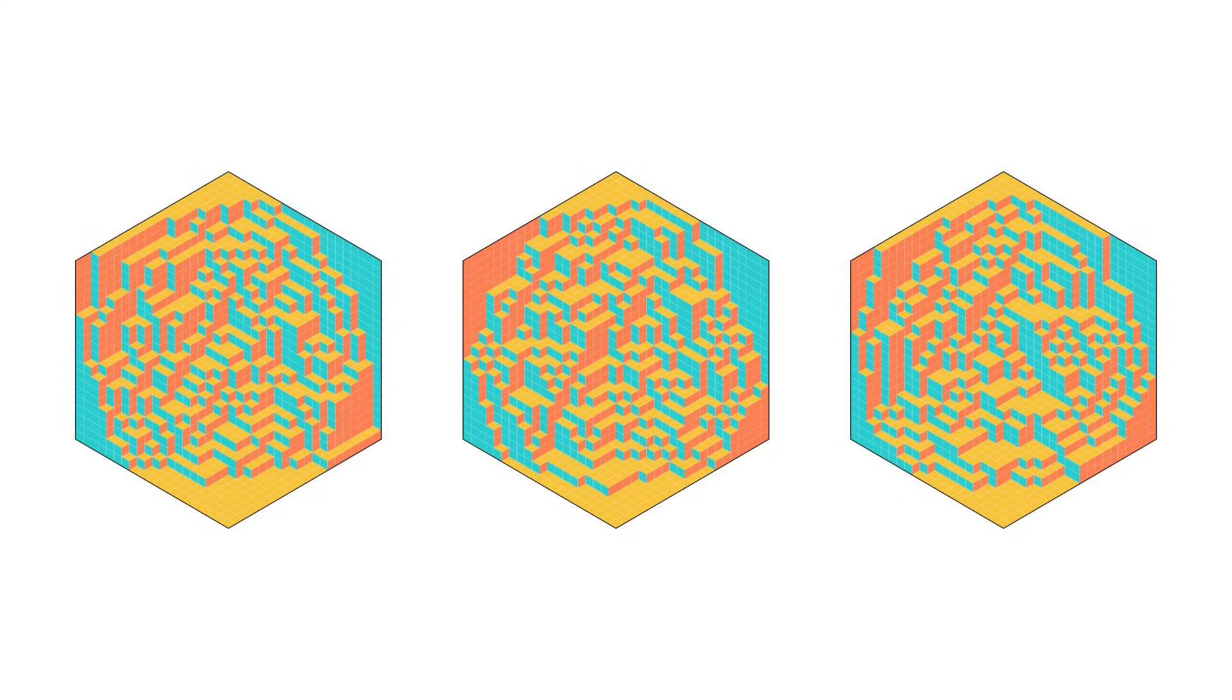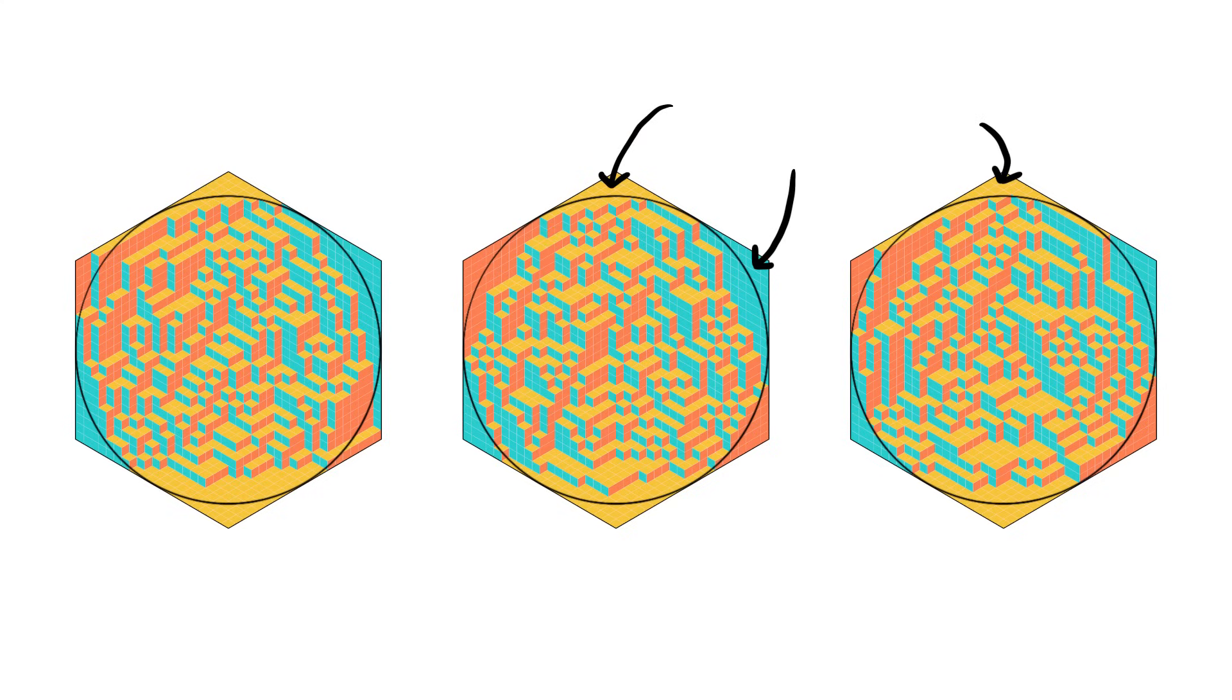The lozenges tend to form a circle. We get this region in the middle that has a good mix of different colors, but outside the circle we get only one color at a time. We say that these regions of only one color are frozen.